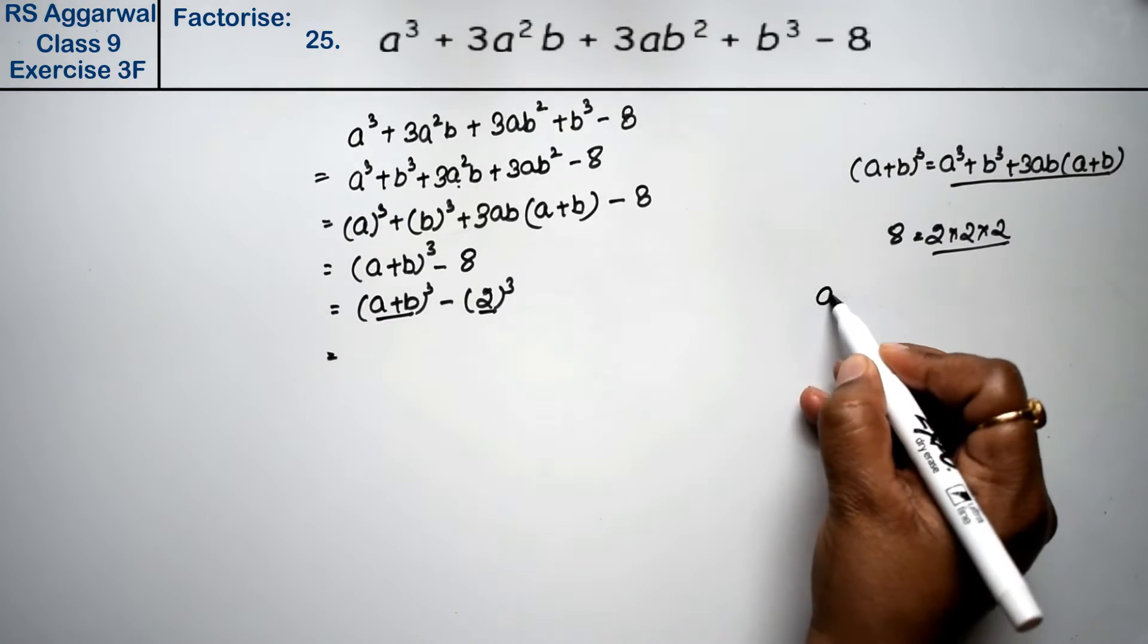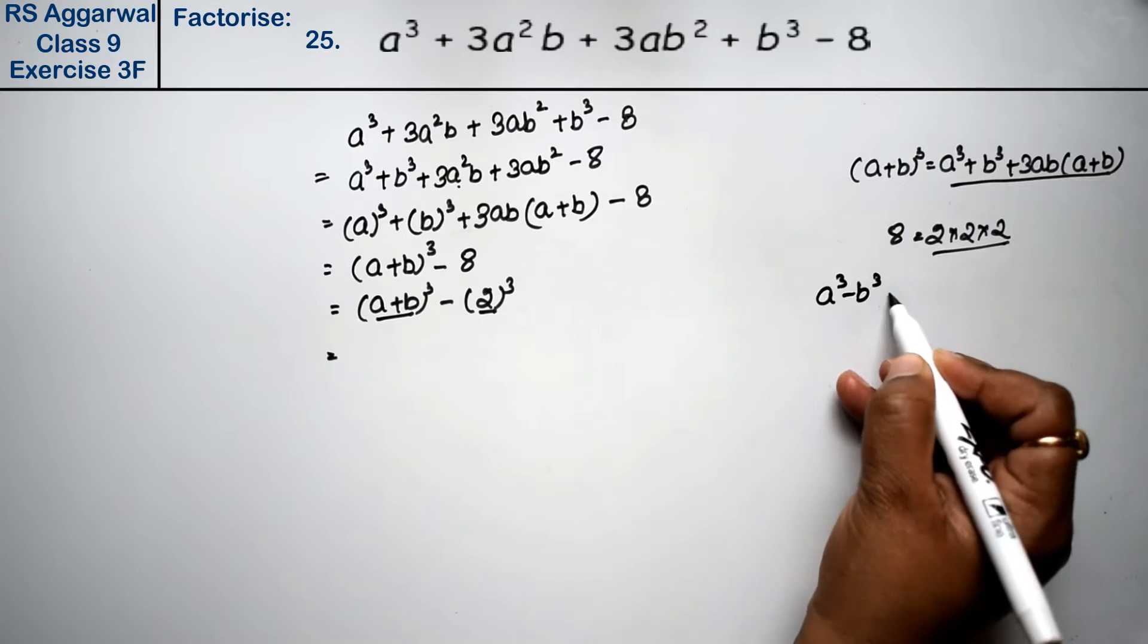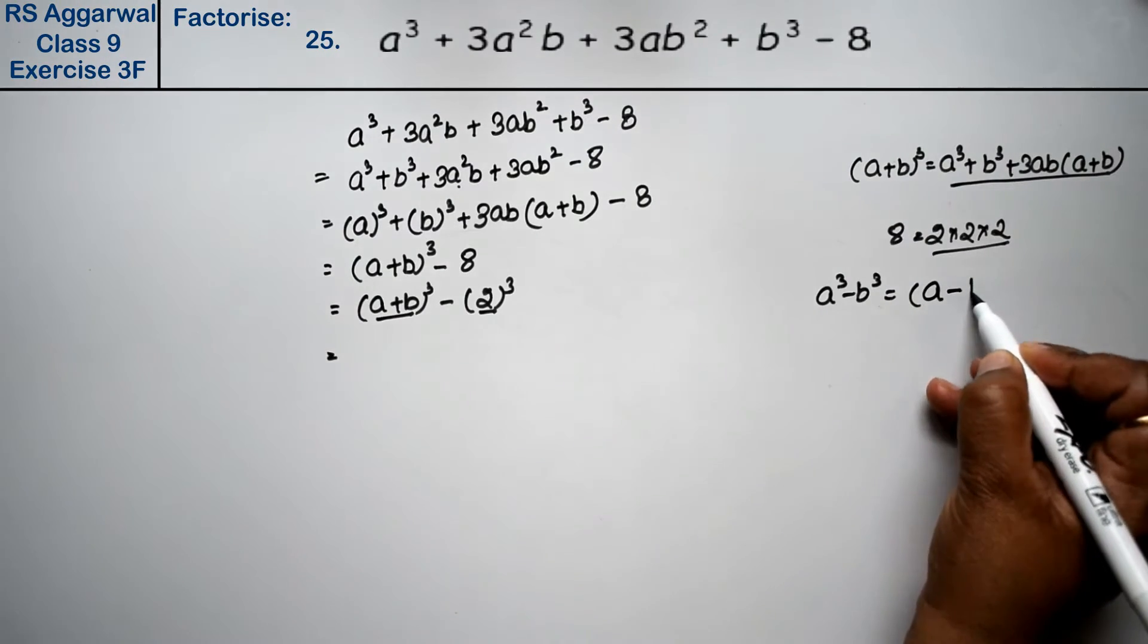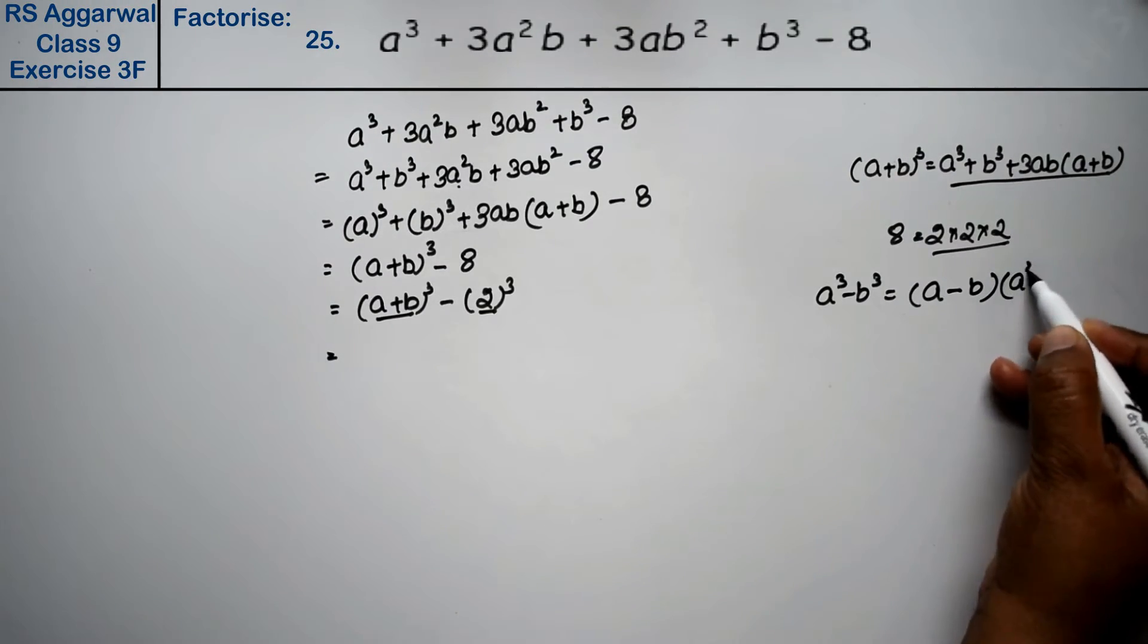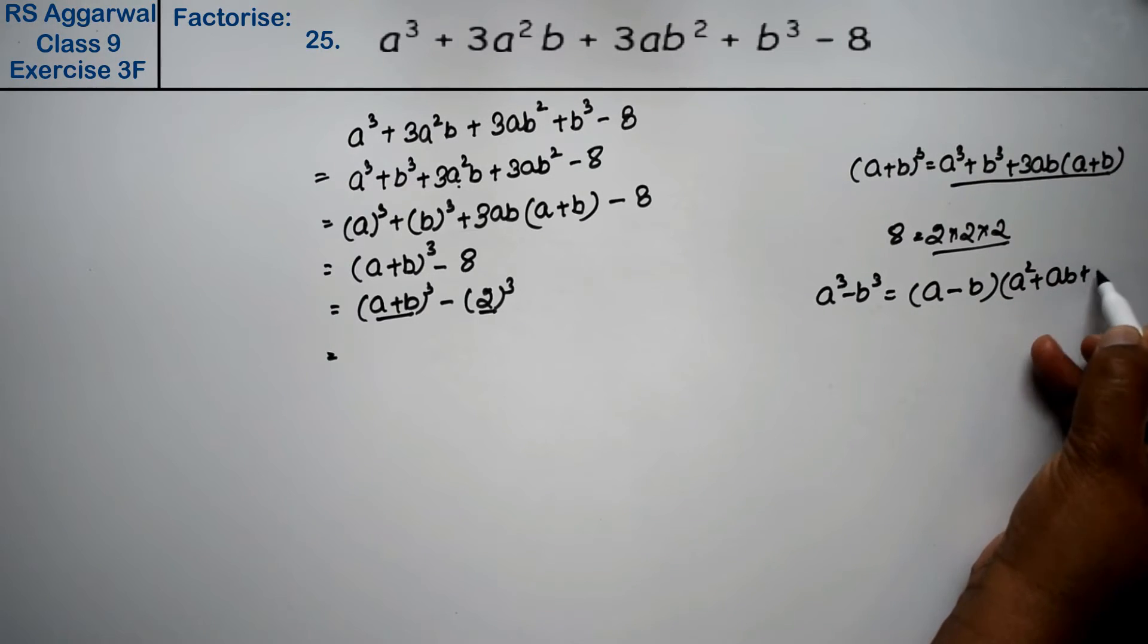So a cube minus b cube. The formula for a cube minus b cube is: a minus b times a square plus ab plus b square.